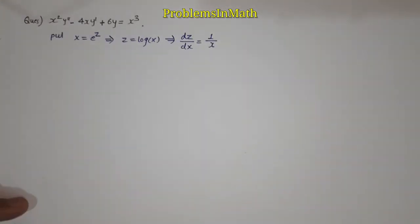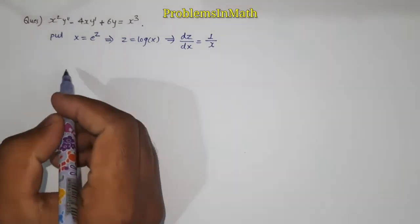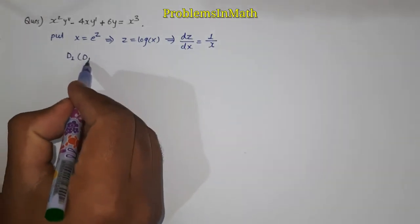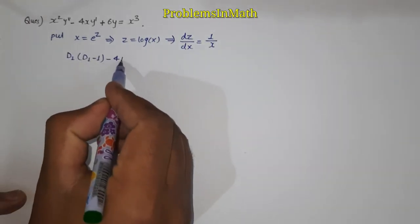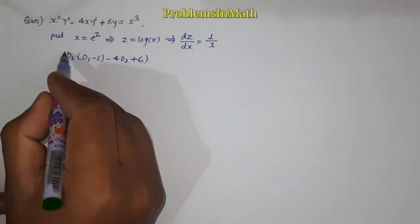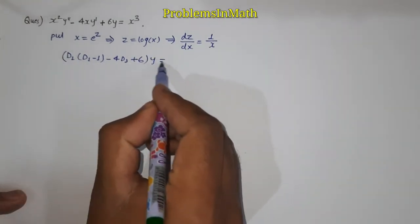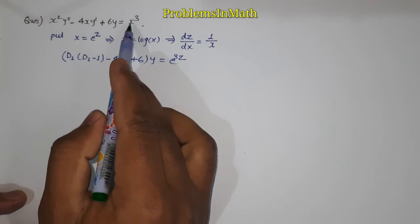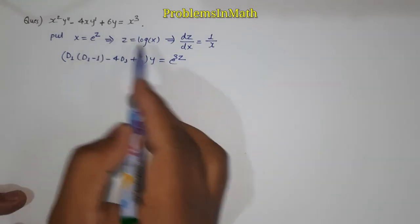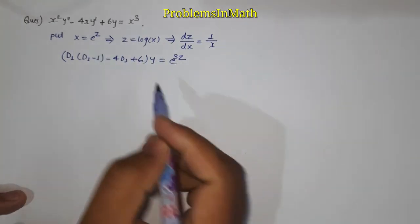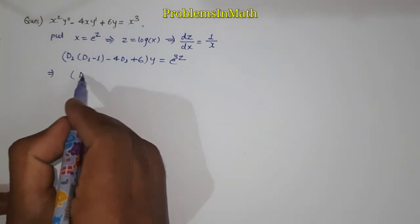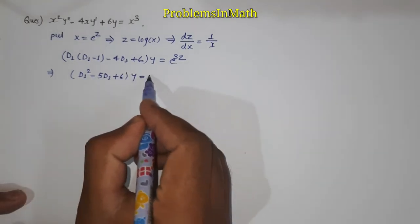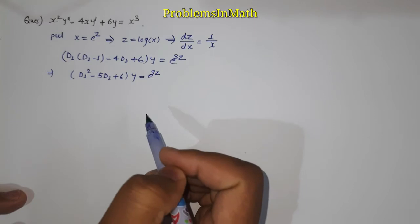Our next step is putting the value. We get D1(D1 minus 1) minus 4 D1 plus 6 y is equal to e to the power 3z, because x cube becomes e to the power 3z. After simplifying this we get D1 square minus 5 D1 plus 6 y is equal to e to the power 3z.